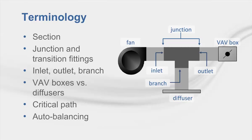Veritrain Duct Designer's database contains hundreds of ASHRAE and United McGill fittings. Junctions have inlet, outlet, and branches. The inlet is where the airflow enters the junction. The outlet is the straight-through path of a junction, and a branch is any other leaving path from the junction. VAV boxes terminate a duct run. Diffusers are the final link in a constant volume duct system, connecting the duct system directly to the space.